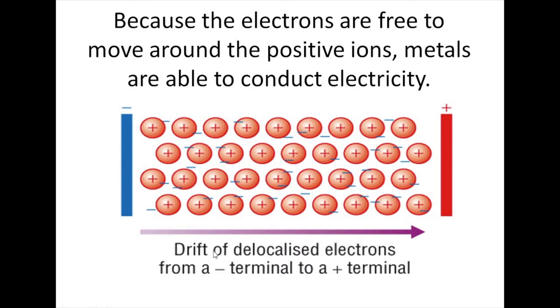The drift of delocalized electrons from the negative terminal to the positive terminal means the electrons can move, so metals can conduct electricity and carry a charge.